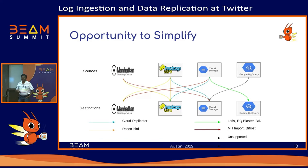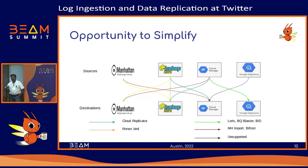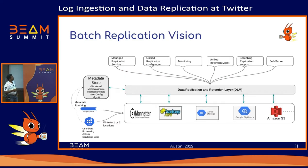We also had an opportunity to simplify. We had separate services for each source and destination combination — that's not scalable. Many customer teams need to interact with different tools based on their needs. We wanted to move away from that fragmented model to a unified story.